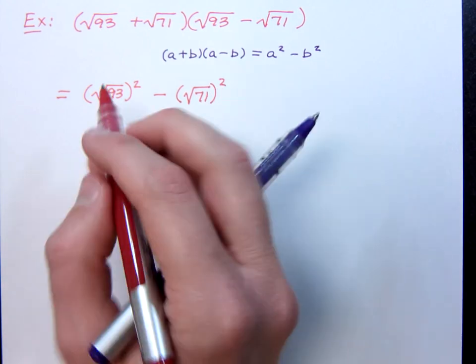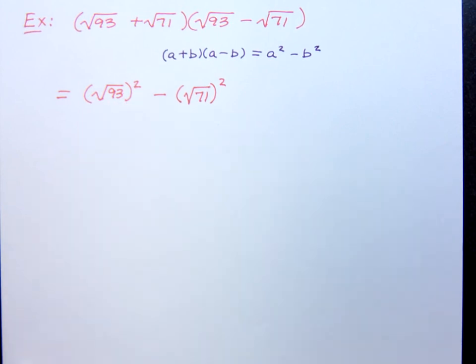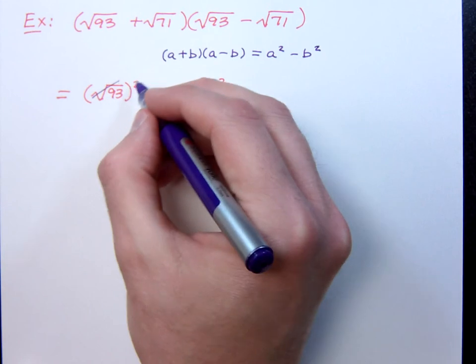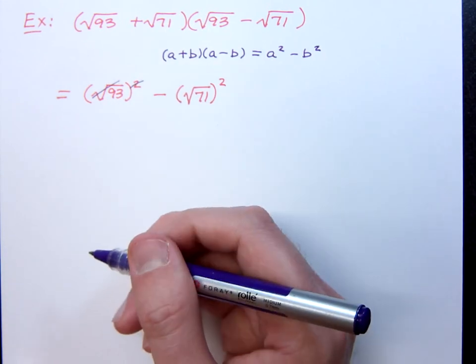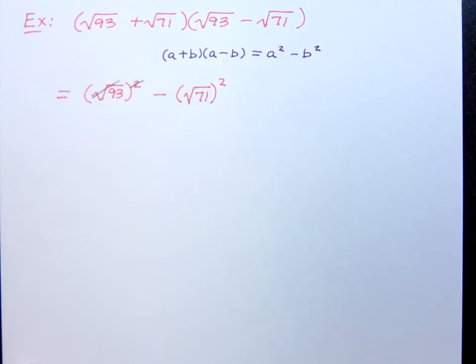Now, what do you think is going to happen if you were to square a square root? Those guys basically cancel each other out. They're inverse operations for the most part when you have a restricted domain of just positive values.